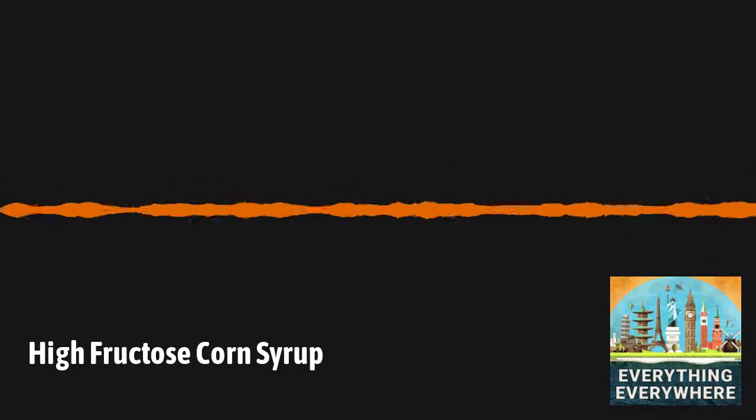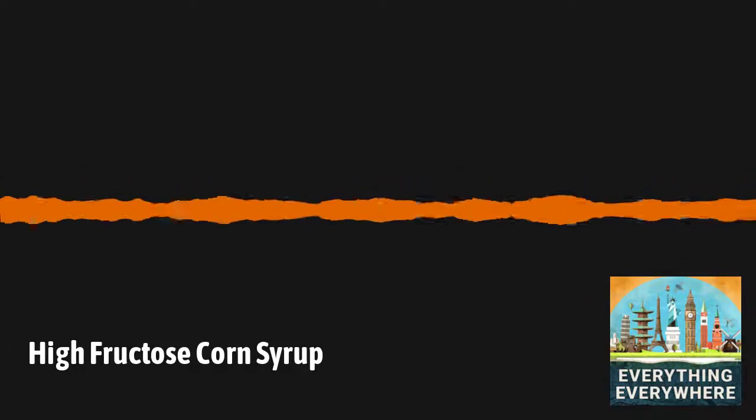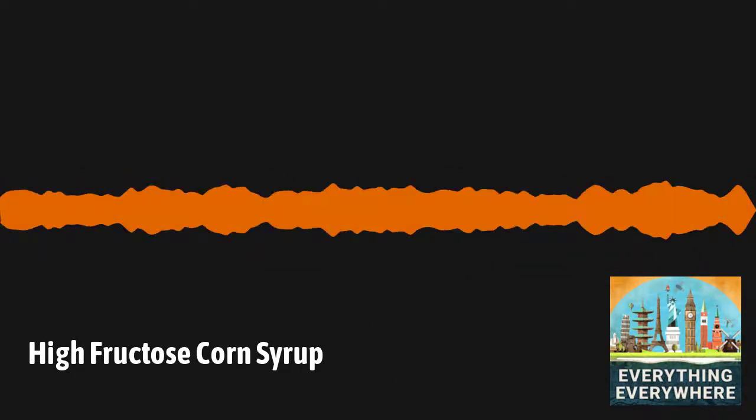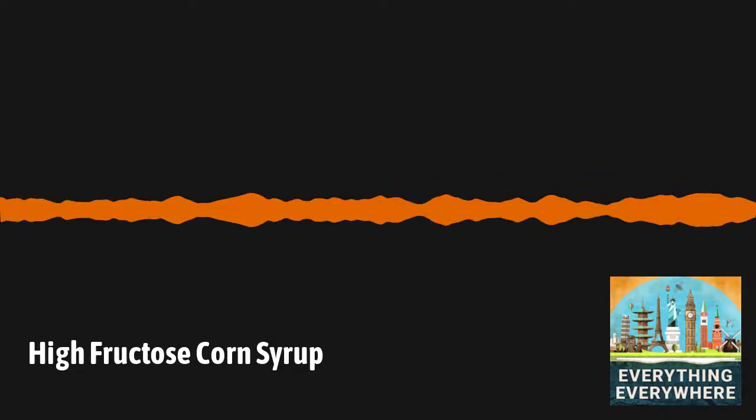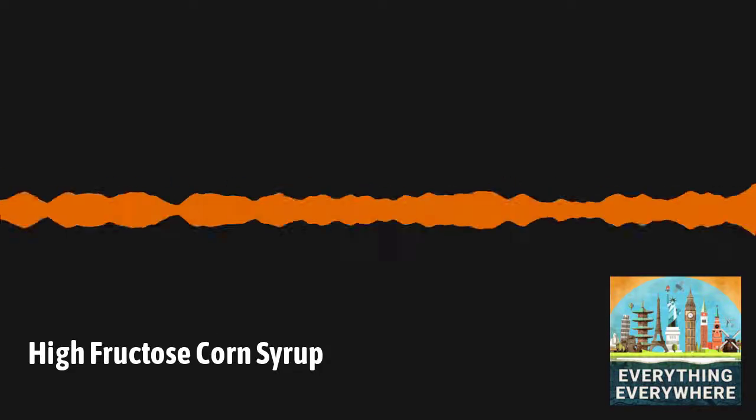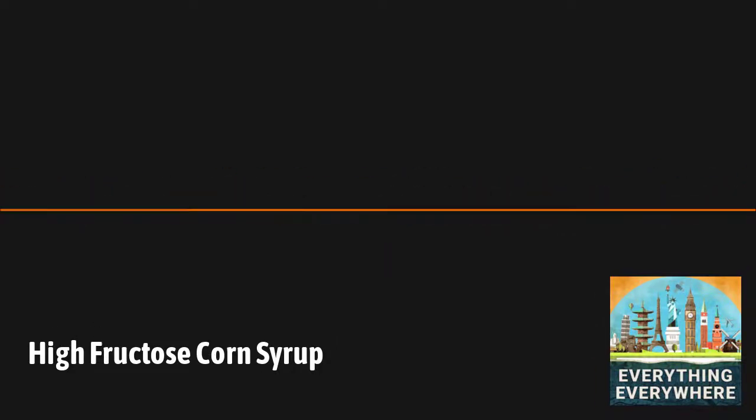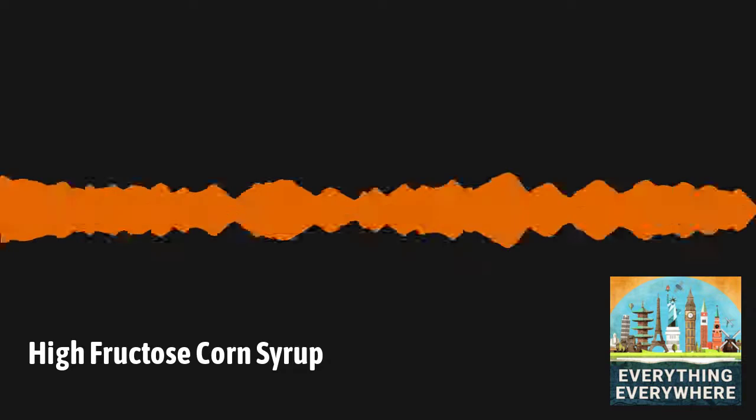Placing high fructose corn syrup into so many different food products isn't necessarily a conspiracy. It's just business. Due to sugar tariffs and corn subsidies, high fructose corn syrup became the cheapest option as a sweetener. And the reason it's in so many products? Because people like it. People like sweet foods.